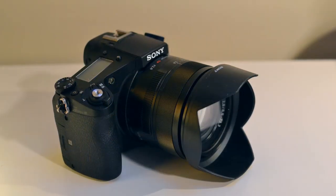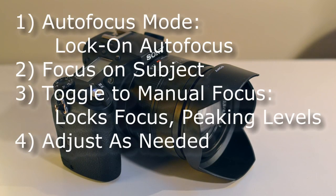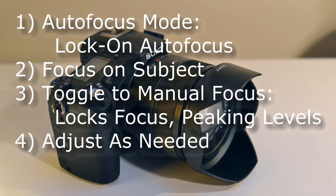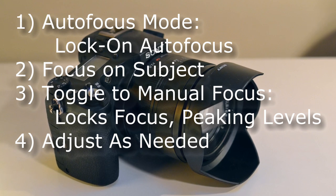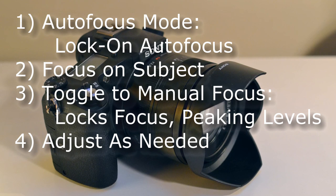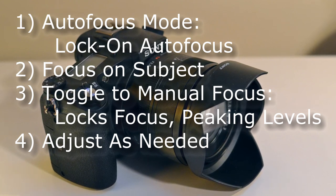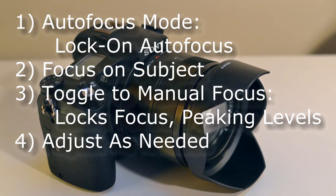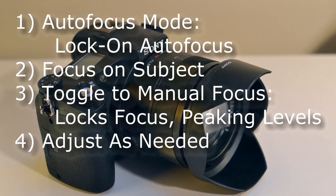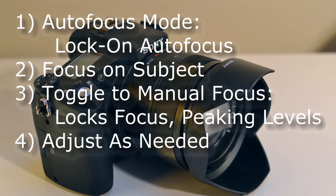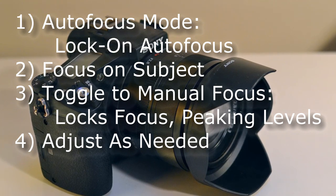How does this work in practice? In autofocus mode, activate the lock-on autofocus and focus on your subject. Then toggle to manual focus. This locks your focus distance and gives you peaking levels. Adjust as needed. To adjust focus distance with the aid of autofocus once again, simply switch back to autofocus mode and toggle lock-on autofocus.